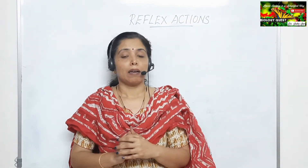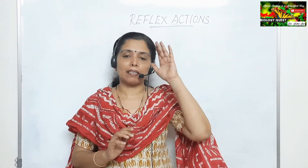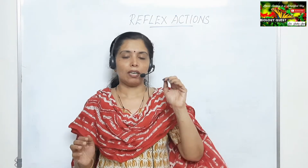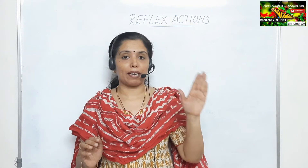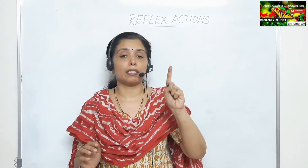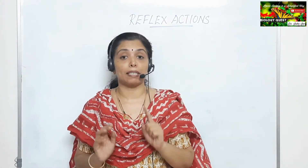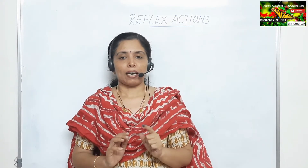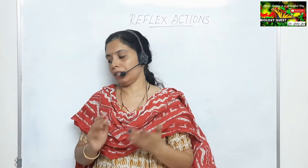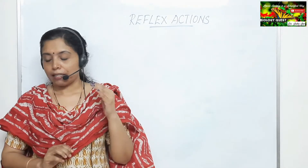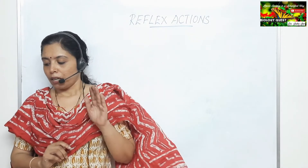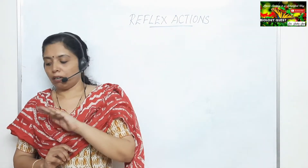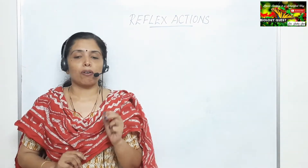The impulse enters and leaves the spinal cord at the same level in the case of reflexes — it does not run up and down the spinal cord. This does not mean the brain is unaware; the brain is well aware of that action, but it is not the brain that decides whether that action needs to be done. The command originates in the spinal cord and the autonomic nervous system.